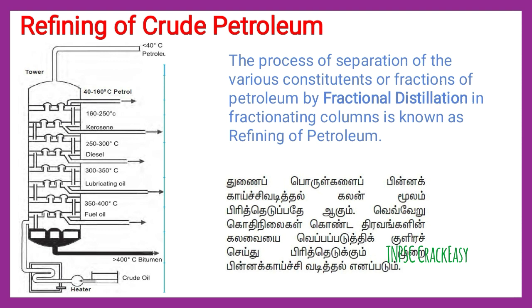We heat the oil up to 400 degrees Celsius. Bitumen is collected at 350 to 400 degrees Celsius. Fuel oil is collected next. Lubricating oil is obtained at around 300 degrees Celsius. Diesel and kerosene are obtained at 160 to 250 degrees Celsius. Petrol is obtained at 40 to 160 degrees Celsius.